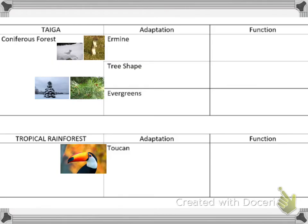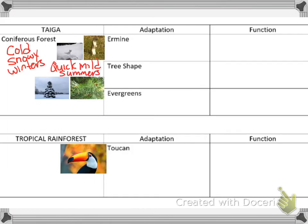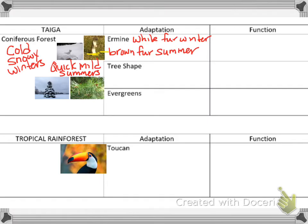Next we're moving on to the taiga biome, which is basically the coniferous forest. Here we have cold, snowy winters with quick, mild summers. The first one is the ermine — this cute little animal. In summer and fall it has brown fur, and in the winter it turns white. You can see it blending into the grassy area in summer and blending into the snowy environment in winter, so its function is camouflage.